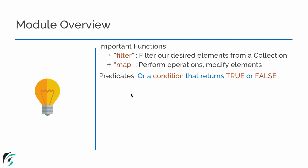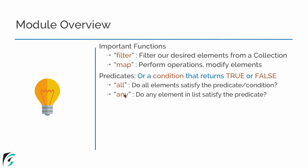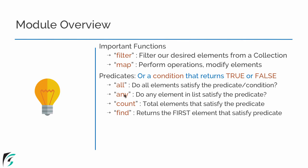The predicate in simple words is just a condition that simply returns a boolean value of true or false. So what are predicate functions? We have all, any, count, and find.